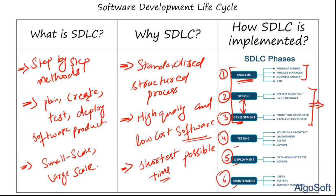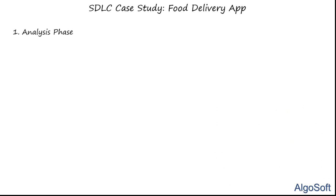The Analysis phase is the first stage and involves data gathering — knowing your target audience and listing functionalities you want in your product. As a case study, we'll be building a food delivery app's login screen to understand how the three main phases — Analysis, Design, and Development — work in the SDLC.